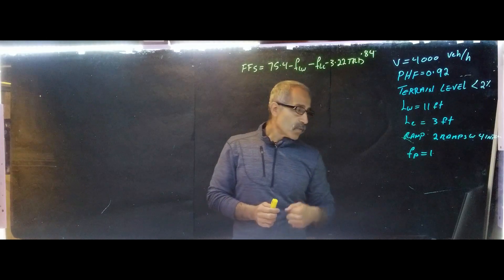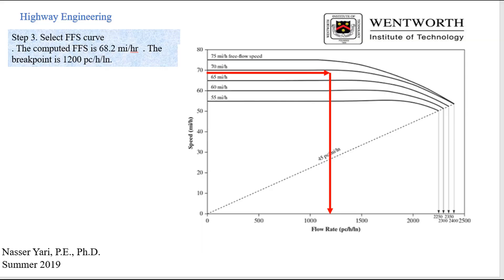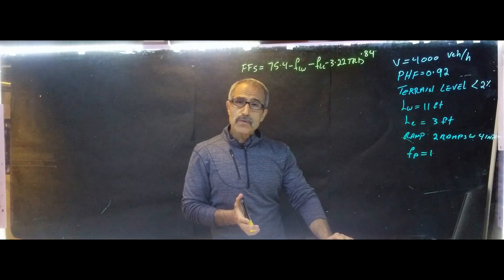Now, once we have that, we're going to go ahead and move on to the next step. The next step is step three. And we're going to select the FFS curve. And then from the FFS curve, when we have 68 mile, which is almost, very close to 70 mile an hour, just before the breaking point, we come down and we're going to see about 1,200 vehicle. So we know we say, okay, the breaking point, our breaking point is 1,200 vehicle. So we take that, and then we're going to go ahead and move to step number four.